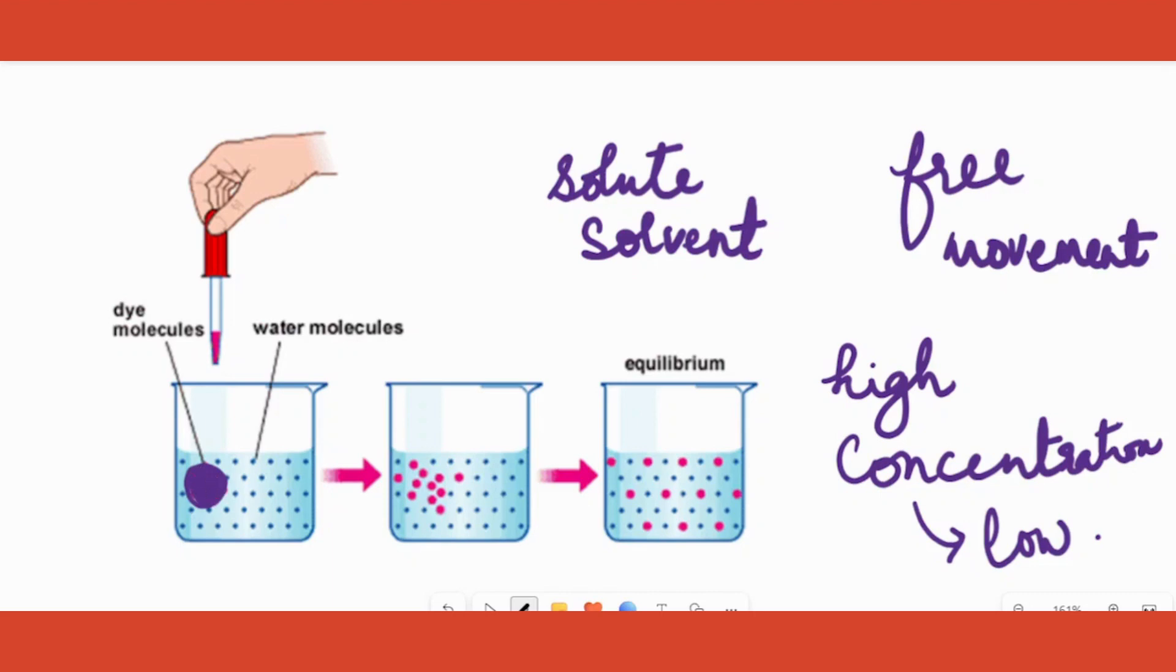From high concentration area, it starts moving to places where it is less in number, so it starts moving in all the directions. Till when does it happen? It happens till the entire water is filled with the same amount of dye molecules, in other words, till it reaches equilibrium.